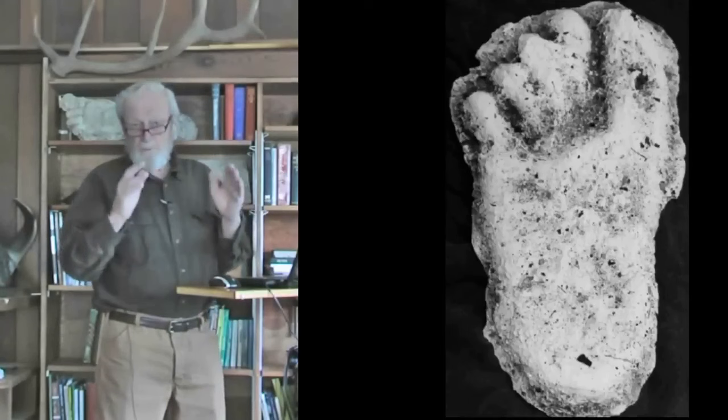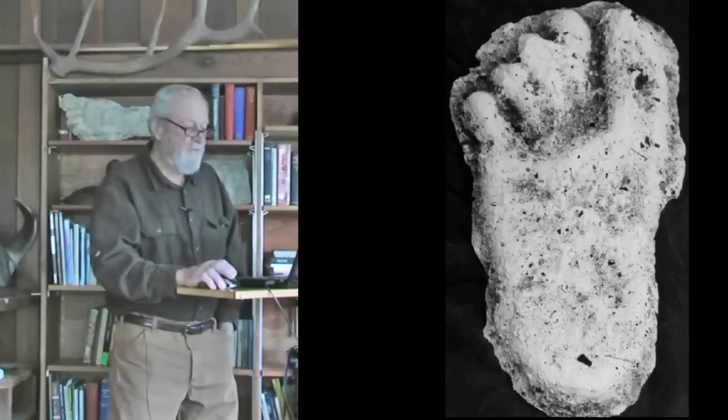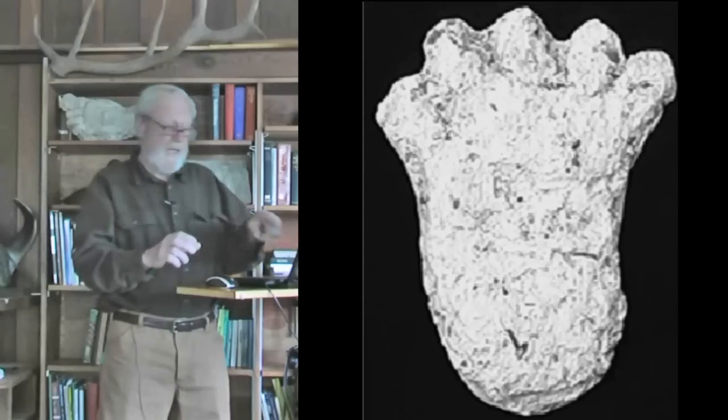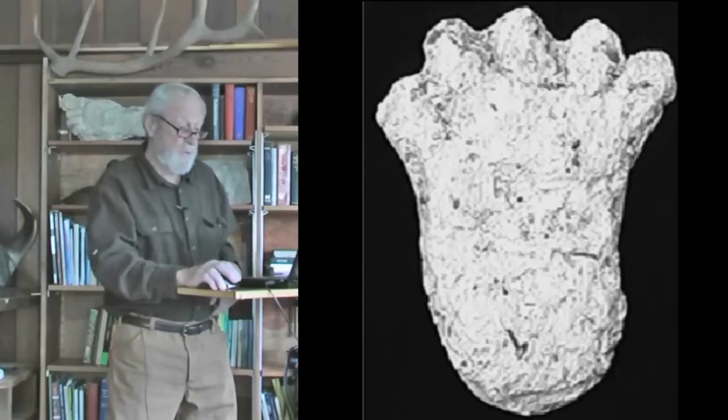One quite consistent feature of Sasquatch tracks is that they tend to be wide compared to their length — broader than the human foot. This is quite an extreme example from Pennsylvania where the width of the foot behind the toes is fully 50% of its length. Similarly, in this rather small Sasquatch track of only eight inches in length, the width of the foot behind the toes is fully 50% of the length.